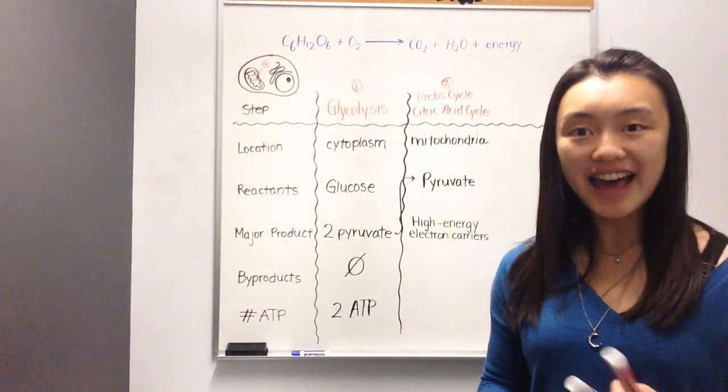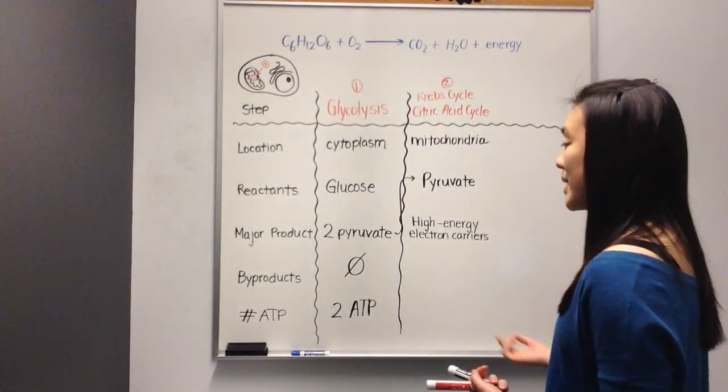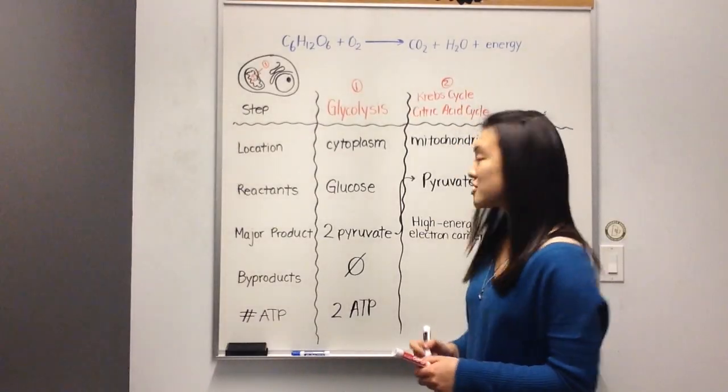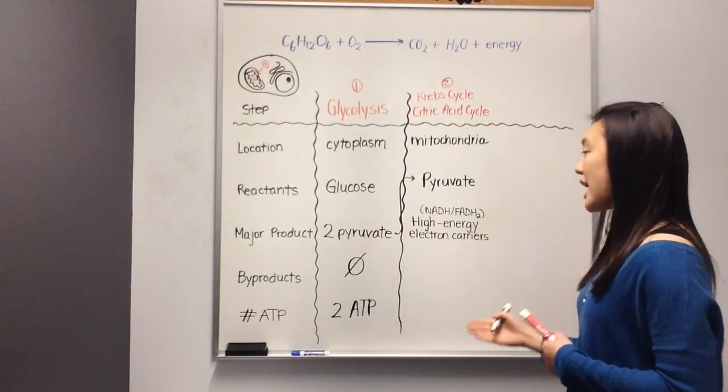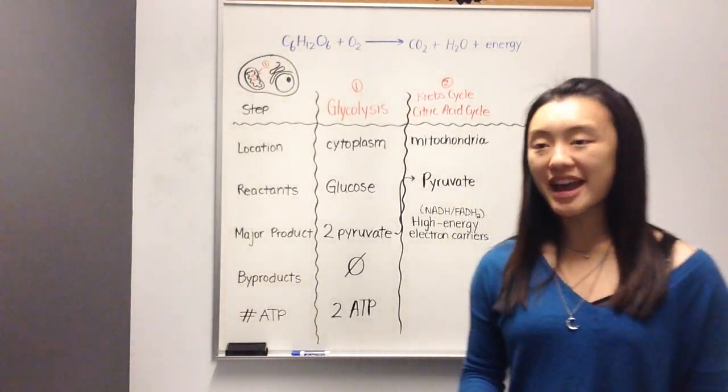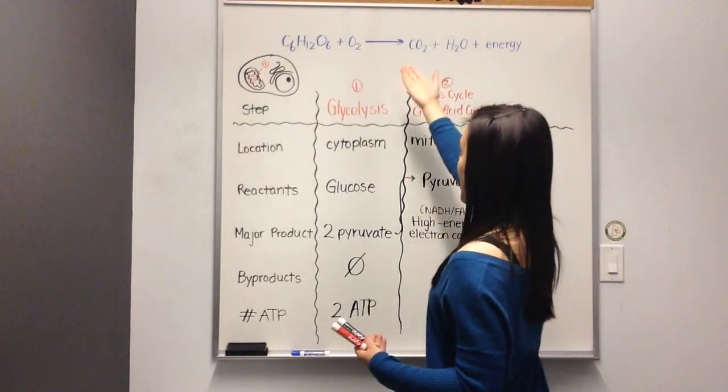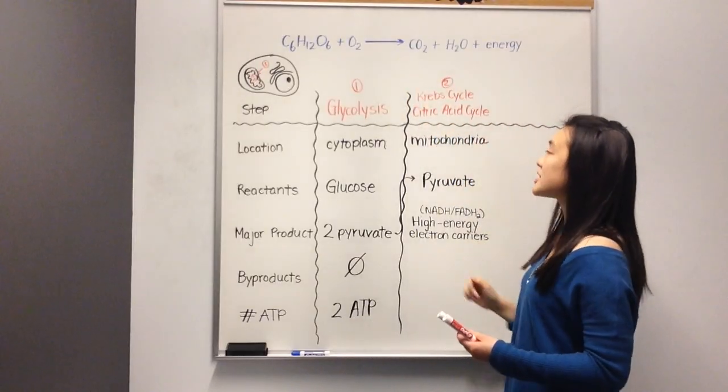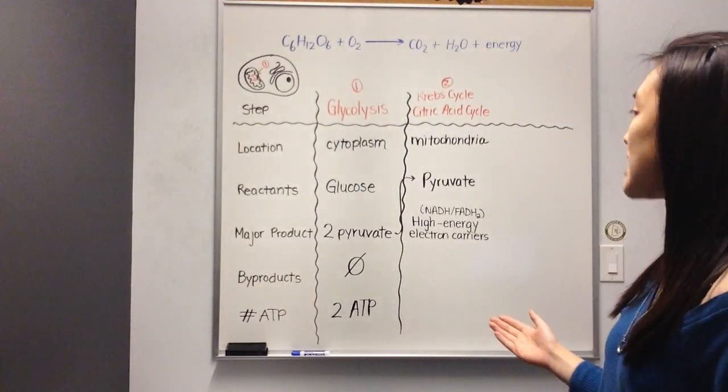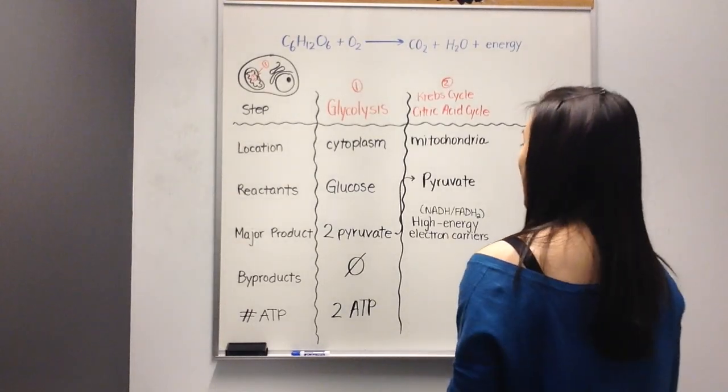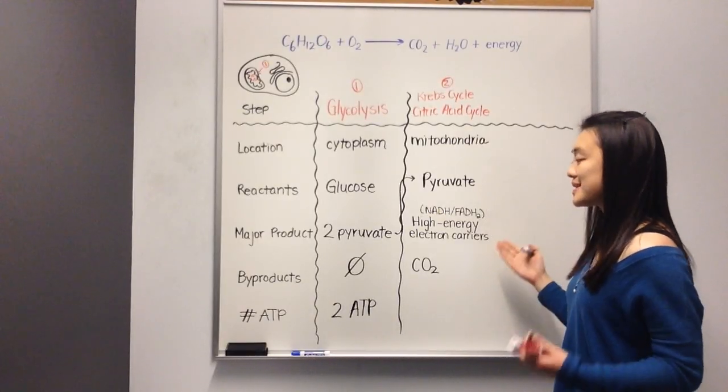You may see these high-energy electron carriers written as NADH and FADH2. You might also see them written as high-energy electrons or electron carriers. I'll call them here high-energy electron carriers and make a note that you might also see them as NADH or FADH2. Again, in the mitochondria, pyruvate turns into these high-energy electrons. The byproduct of this reaction is carbon dioxide. Remember, when humans are breathing, we're eating sugar and breathing in oxygen. We always exhale carbon dioxide as a waste product. If anyone ever asks you where that carbon dioxide comes from, you'll know that the step in which this occurs is the Krebs cycle or the citric acid cycle.